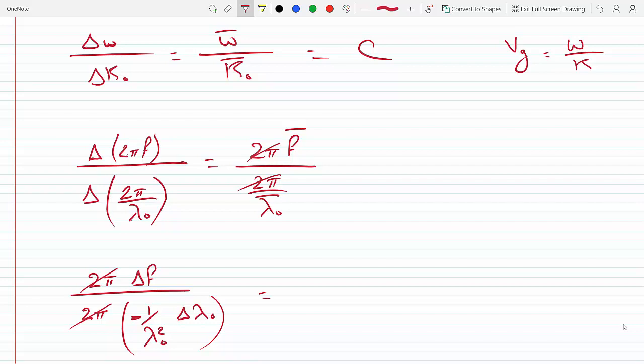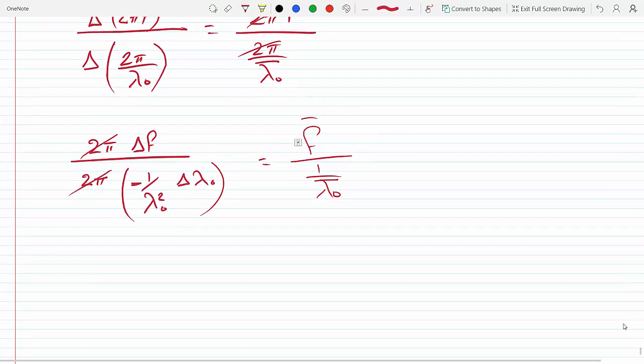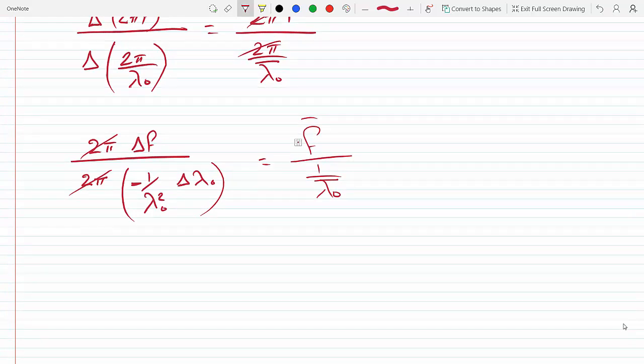And this has to equal—I could cross these out and I could cross these out, so this becomes the frequency.